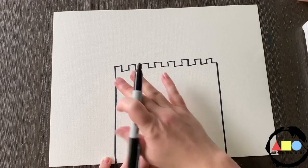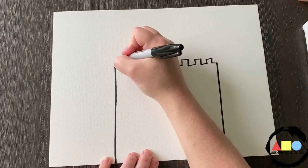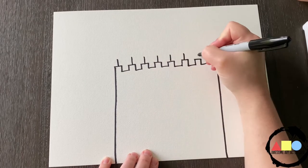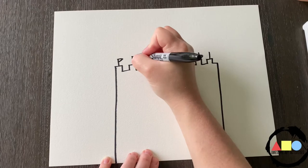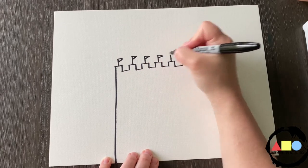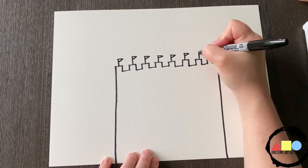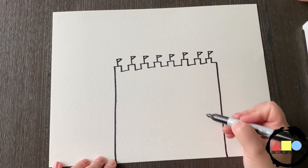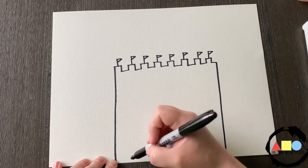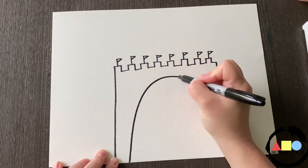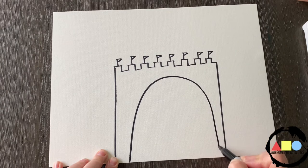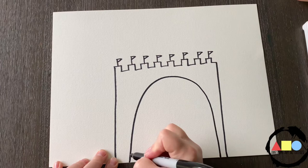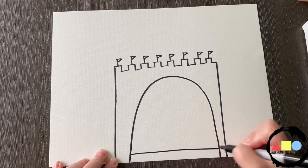Then I like to add some extra details to this, so I'm going to add a flag on each one of these. So with a line and a little triangle. Next, we're going to do a semicircle inside of your big building. Just like that. Now, let's add horizontal lines going across.